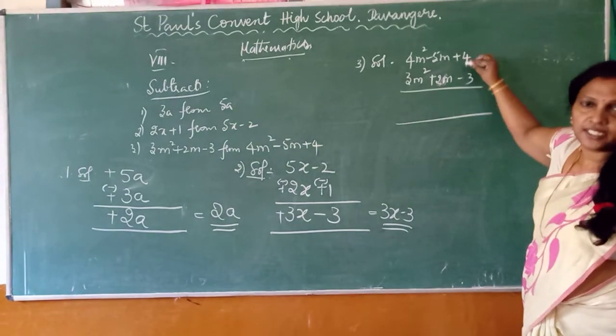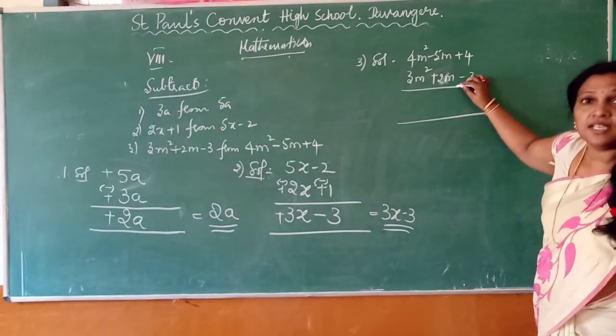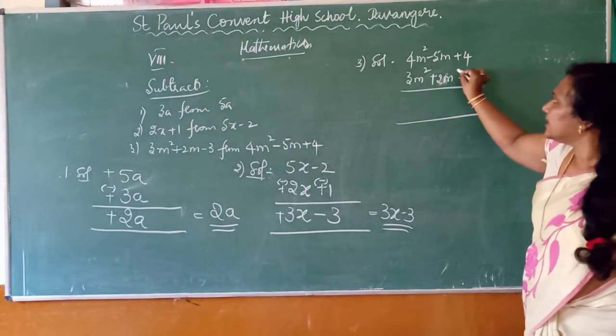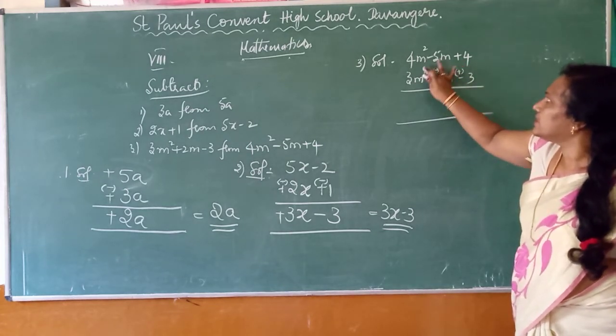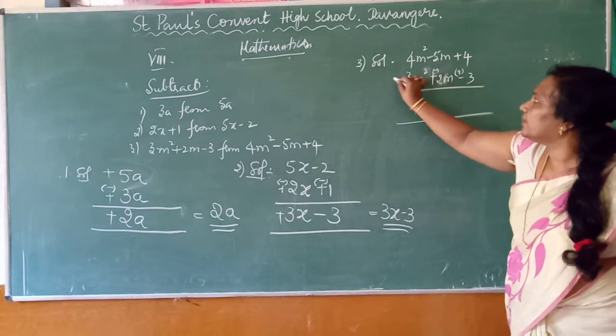'From' should be first. Then the next expression which has to be subtracted, change the sign. Minus becomes plus, plus becomes minus, plus three becomes minus.